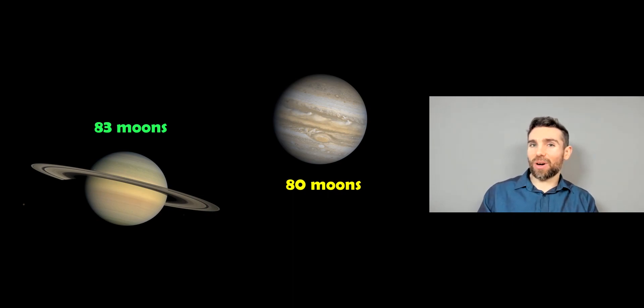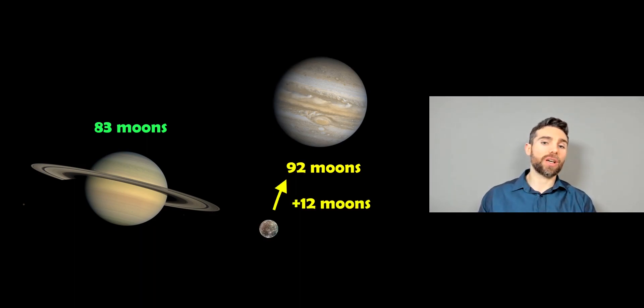And I say only, 80 is still a lot of moons for a planet to actually have. But there's recently been another 12 discovered orbiting Jupiter. That takes it to 92. So 92 moons orbiting Jupiter and 83 around Saturn. So now Jupiter is the planet with the most moons in our system.